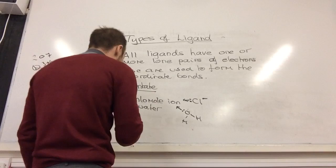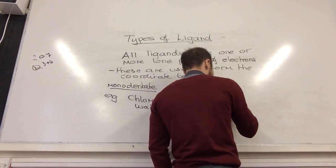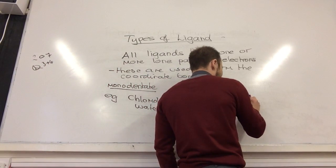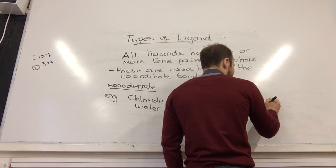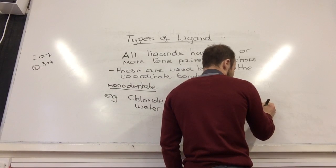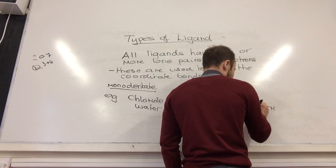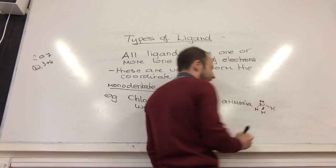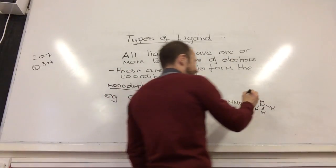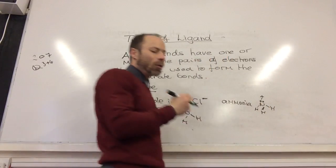Another common one is ammonia that we'll be using. Ammonia NH₃. It's got a lone pair of electrons on the nitrogen that it can use to form a coordinate bond with.